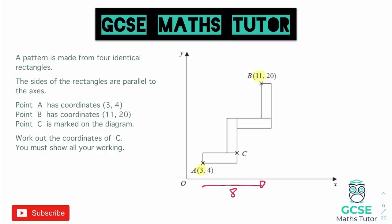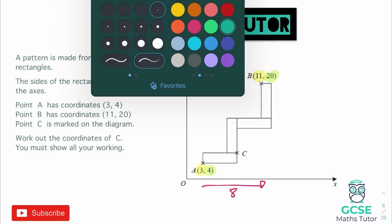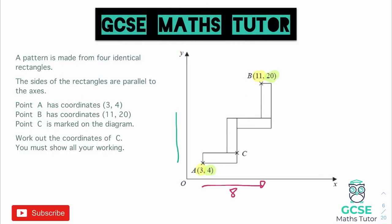Now let's have a look at our vertical distance. That goes from 4 up to 20. So that vertical distance going from 4 up to 20 is going to be 20 take away 4, which is 16. So there's our distance.